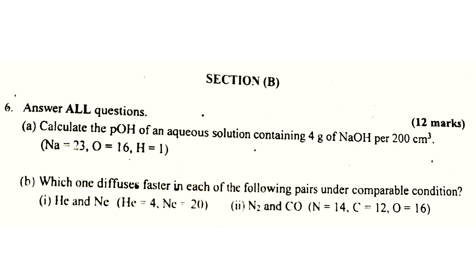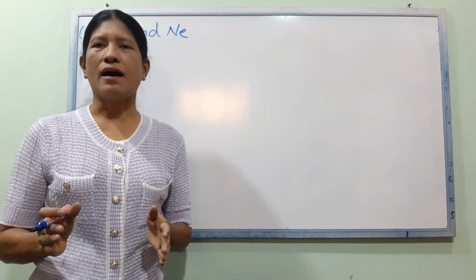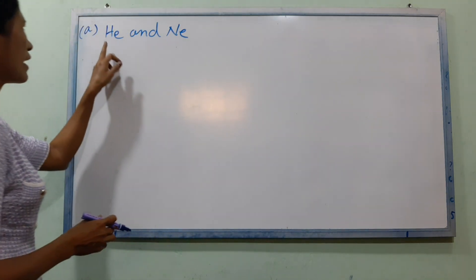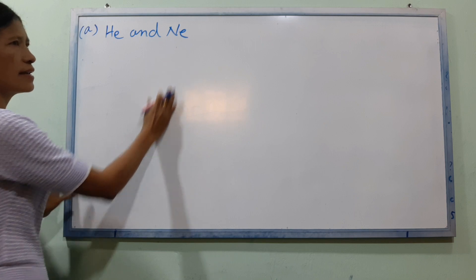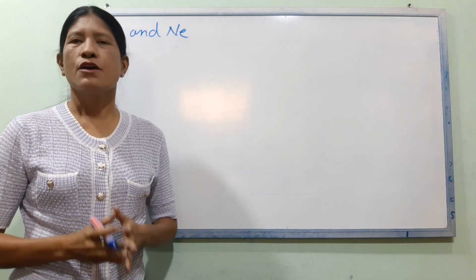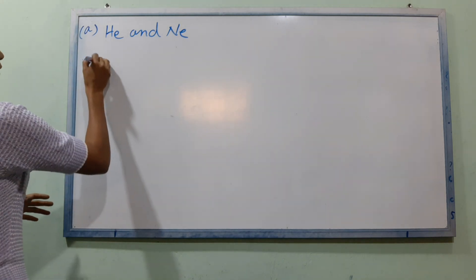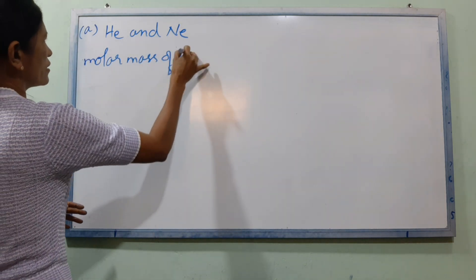Now number B: which one diffused faster in each of the following pairs, given the conditions? So we have the mass of this — you can come into the mass of the mass.